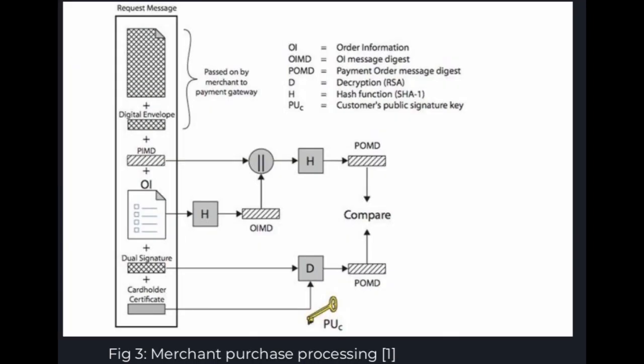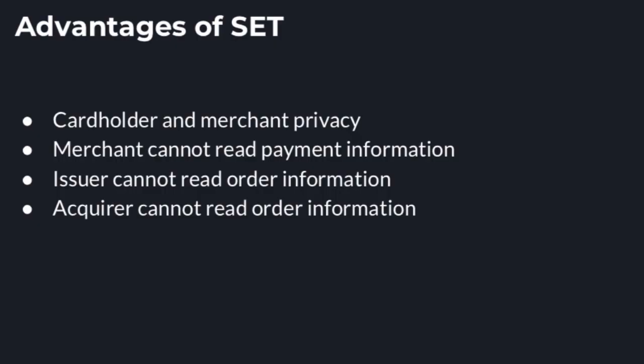The order information, dual signature, and cardholder certificate are passed to the merchant. The merchant passes this information to the payment gateway. At the merchant processing side, the payment information message digest and order information message digest are used to obtain the payment order message digest, which is compared with the encrypted dual signature decrypted using the bank's public key. Advantages of SET include cardholder and merchant privacy — the merchant, issuer, and acquirer cannot read order or payment information.